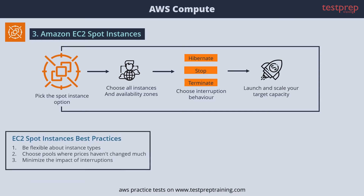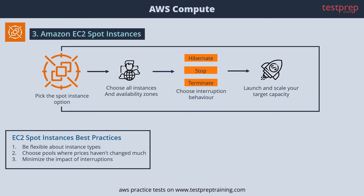It is beneficial to follow best practices for using spot instances. One: be flexible about instance types. Test your application on different instance types when possible, because prices fluctuate independently for each instance type in an availability zone. You can often get more compute capacity for the same price when you have instance type flexibility.